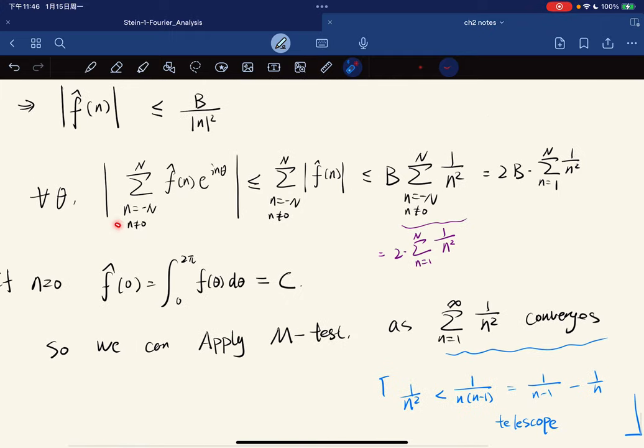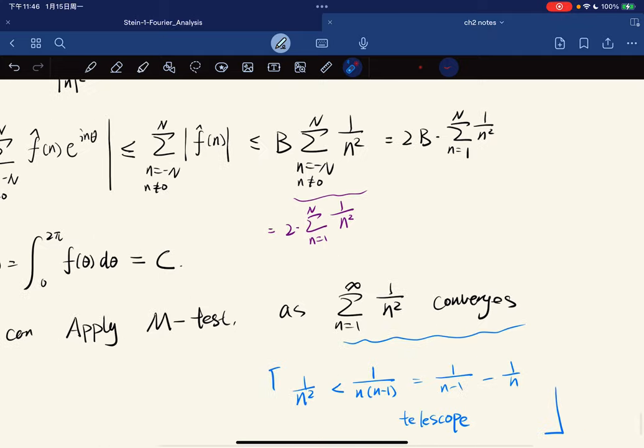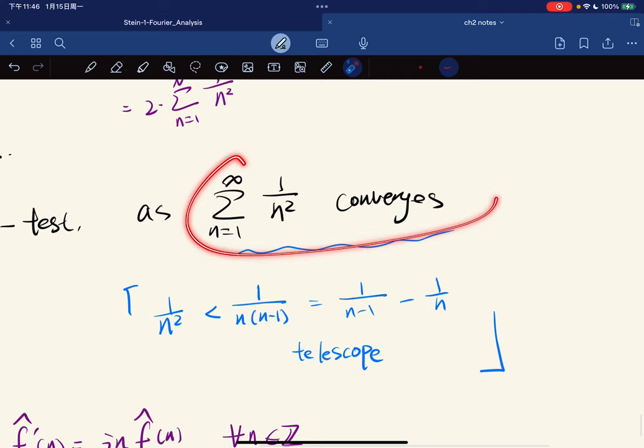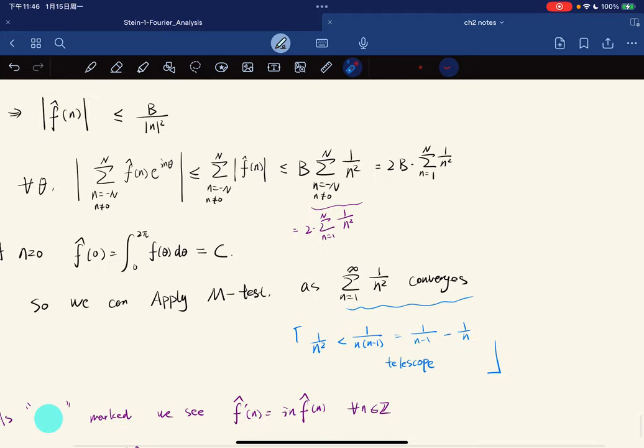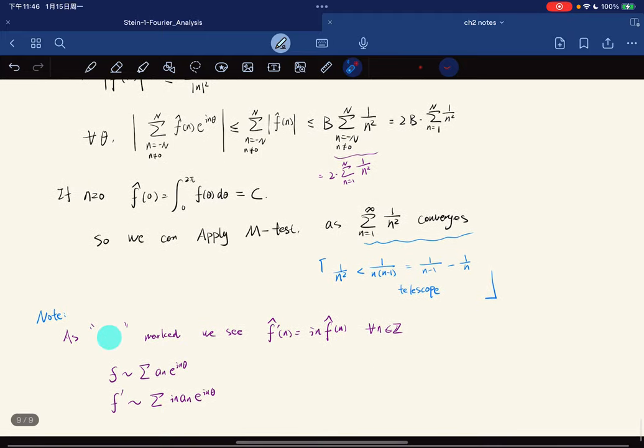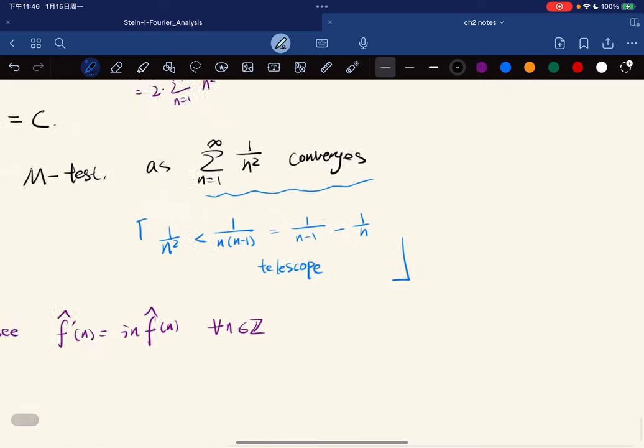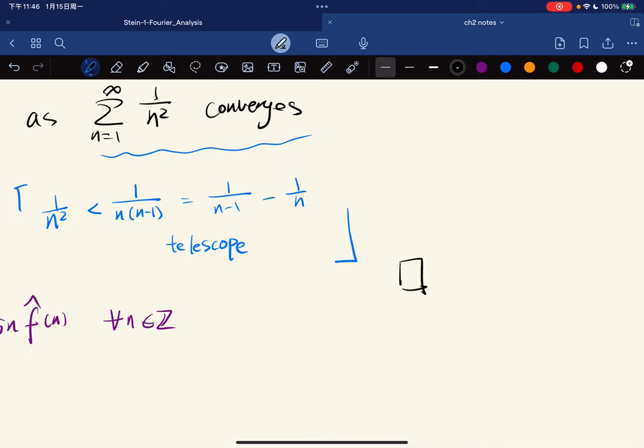And if n goes to zero, we talked about before, then we can apply M-test, right? This is bounded by some constant, and the sum of the series of this constant converges. And this converges. So we really have this. And you use the telescope to see that they're converging. So this proves the corollary.